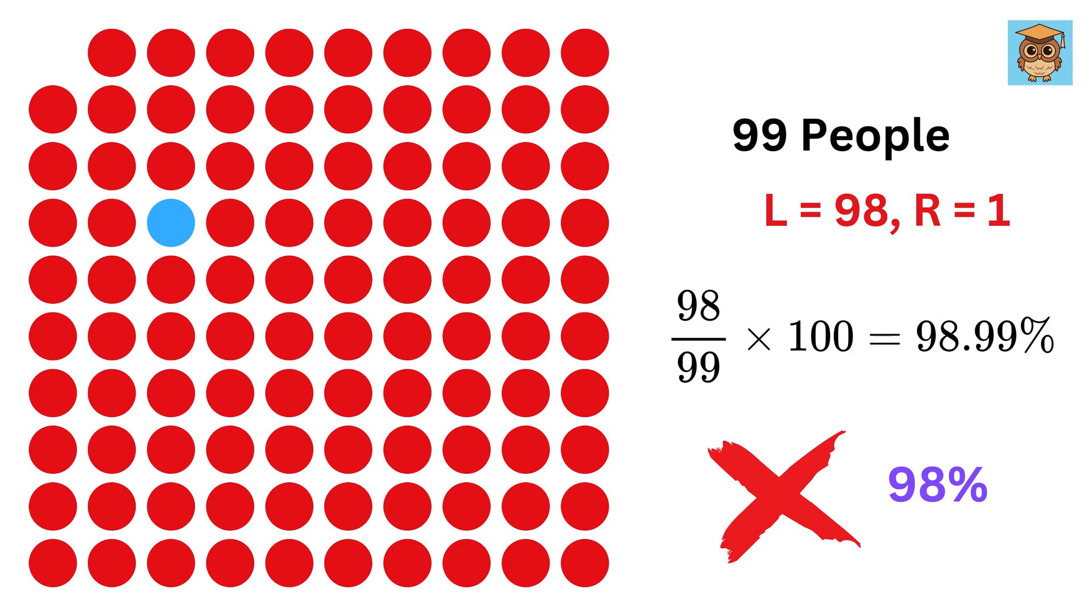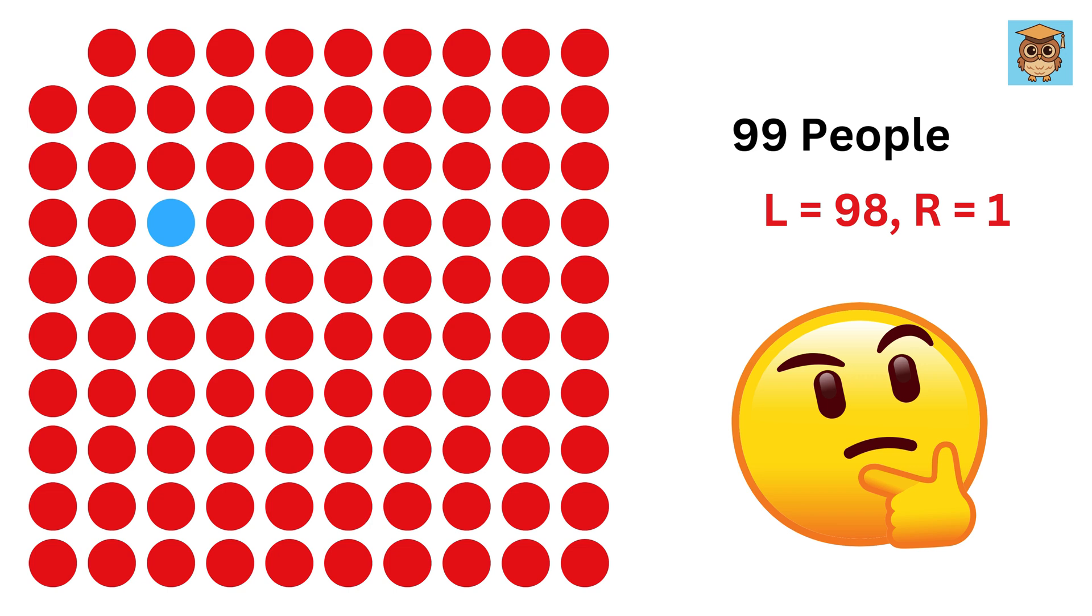which is not even close to 98%. But you can see that the percentage at least reduced from 99, and it came close to 98, although still very far away from 98. So, what can be done now? Let us remove one more left-handed person and see what happens.